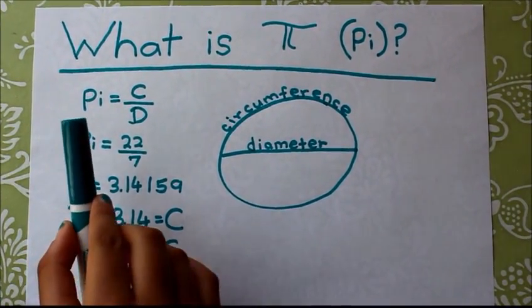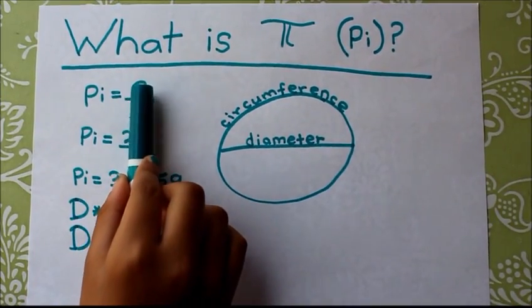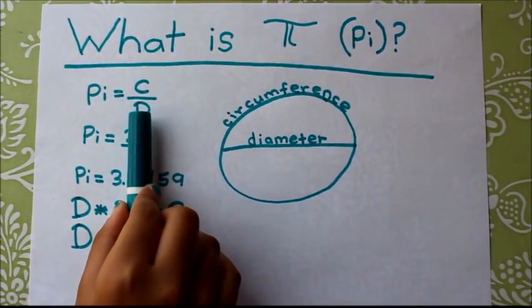Hi everyone. Today we're going to learn what is pi. Pi is the circumference over the diameter of a circle.